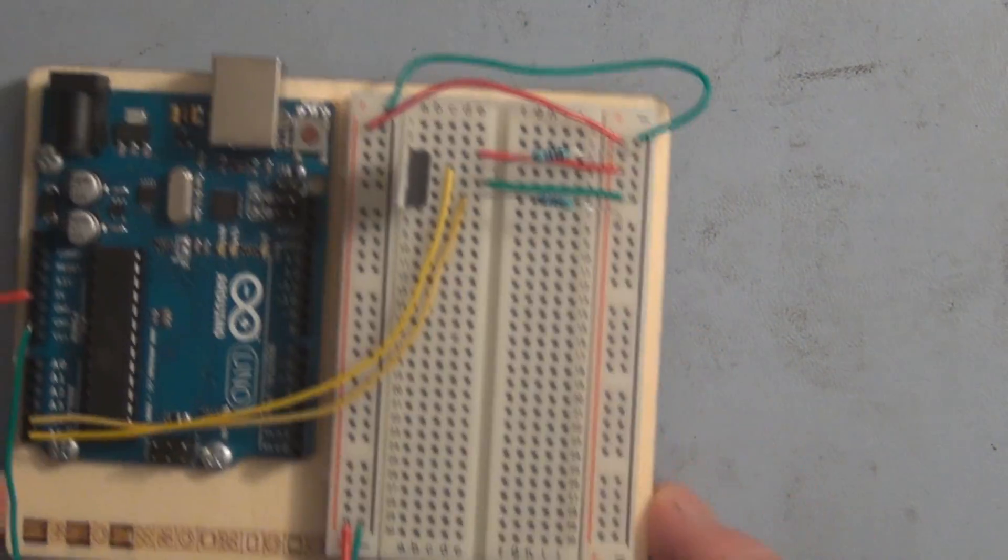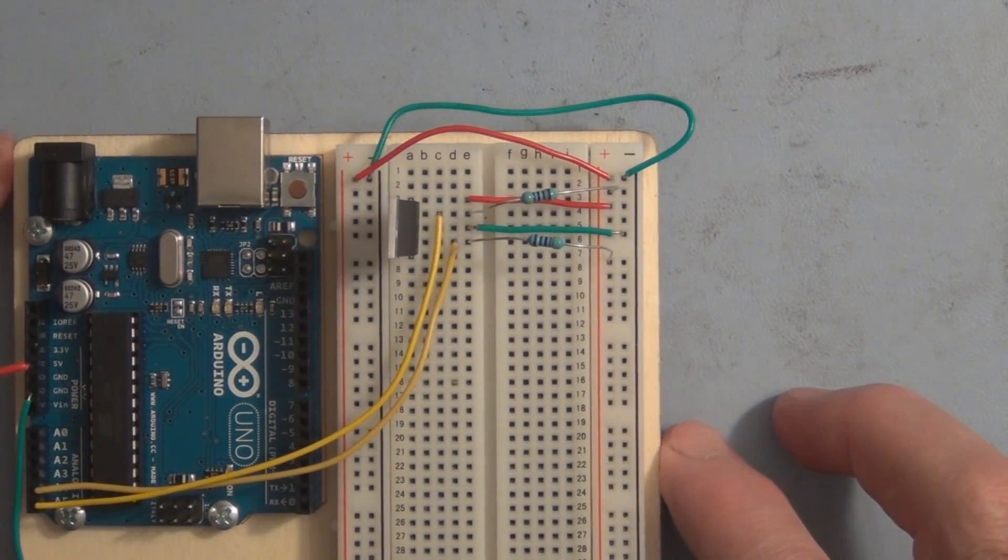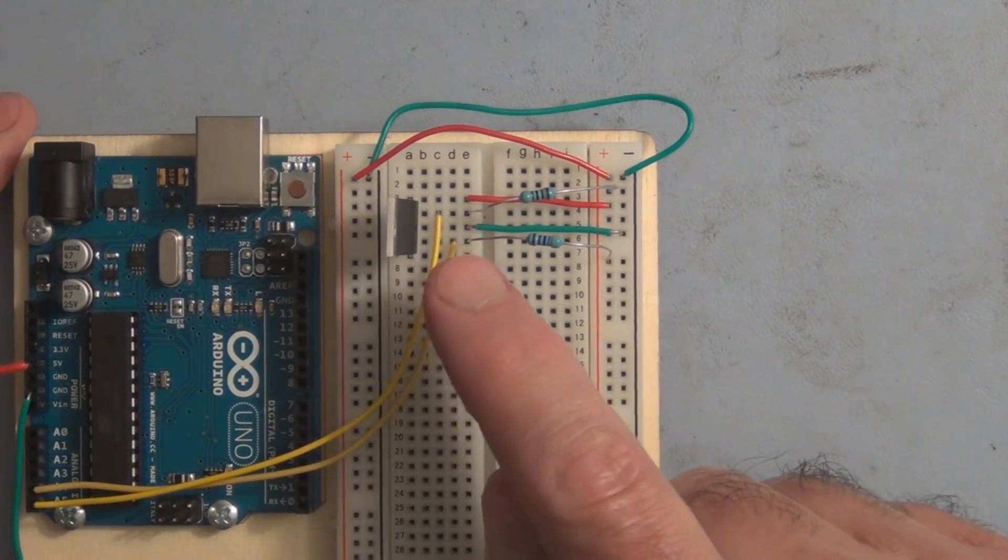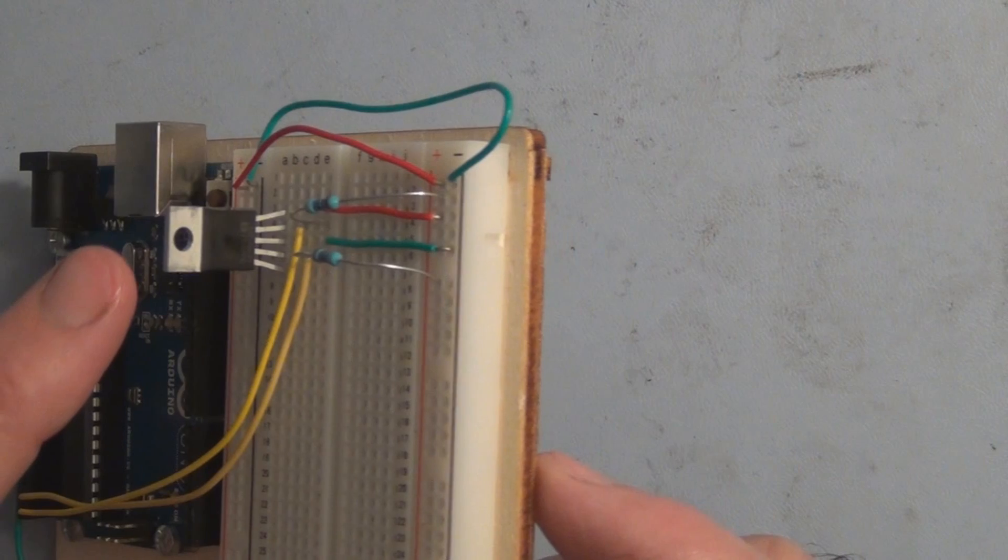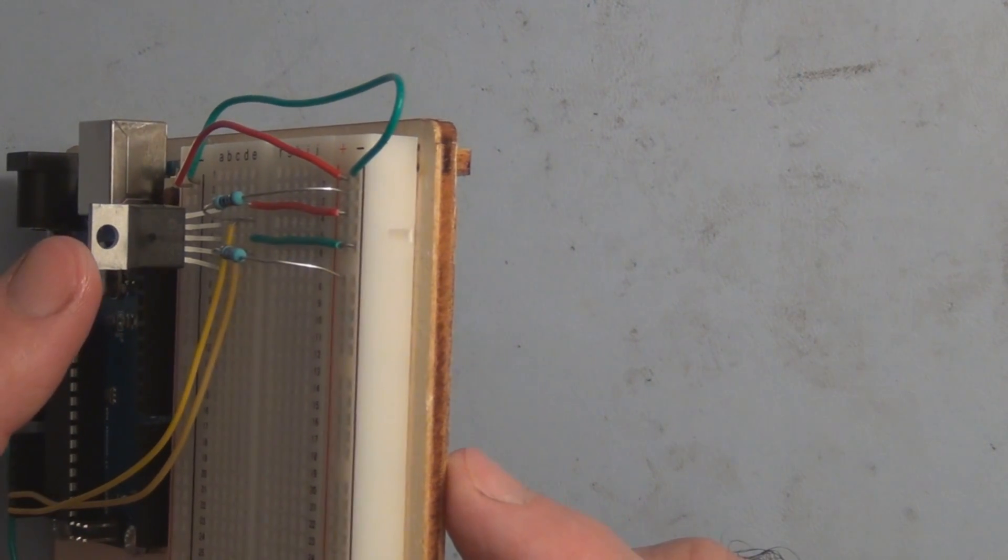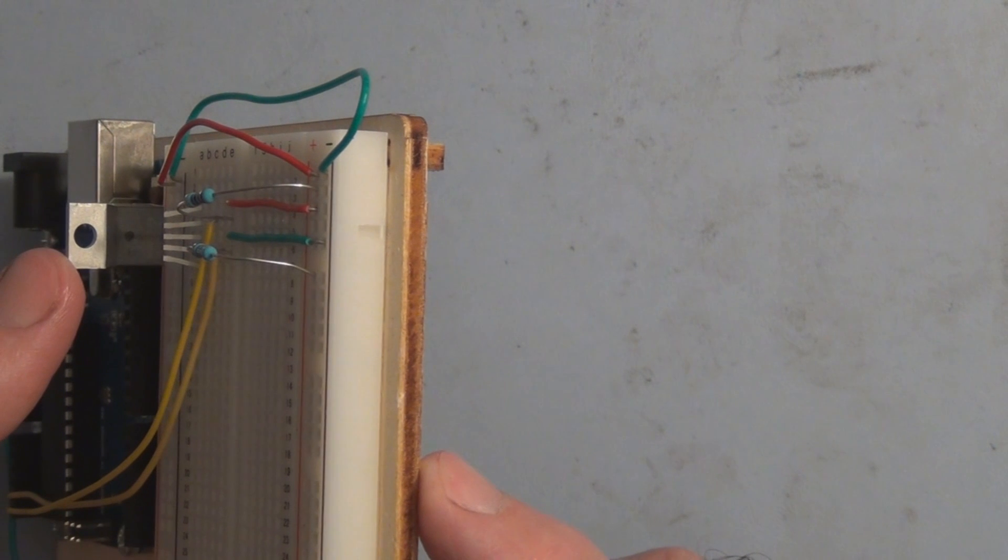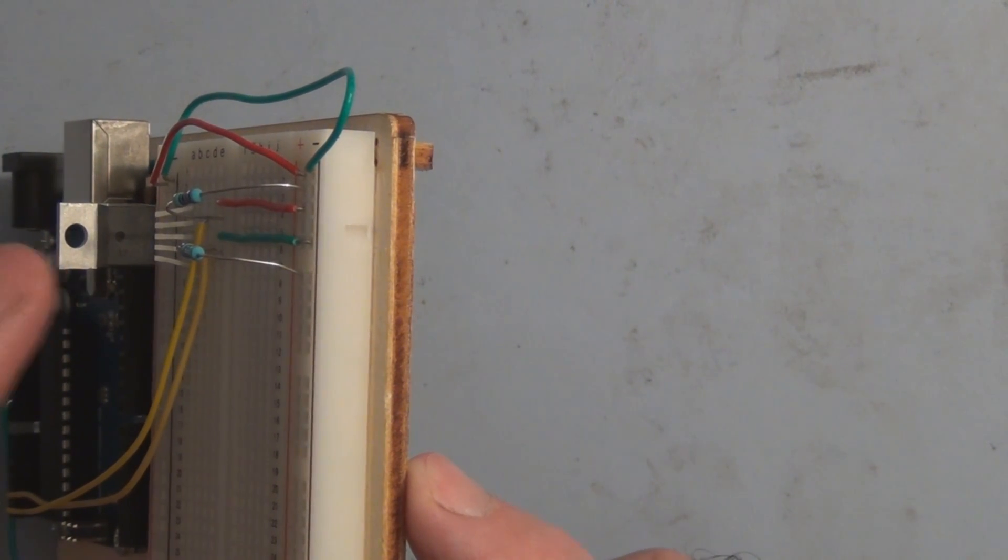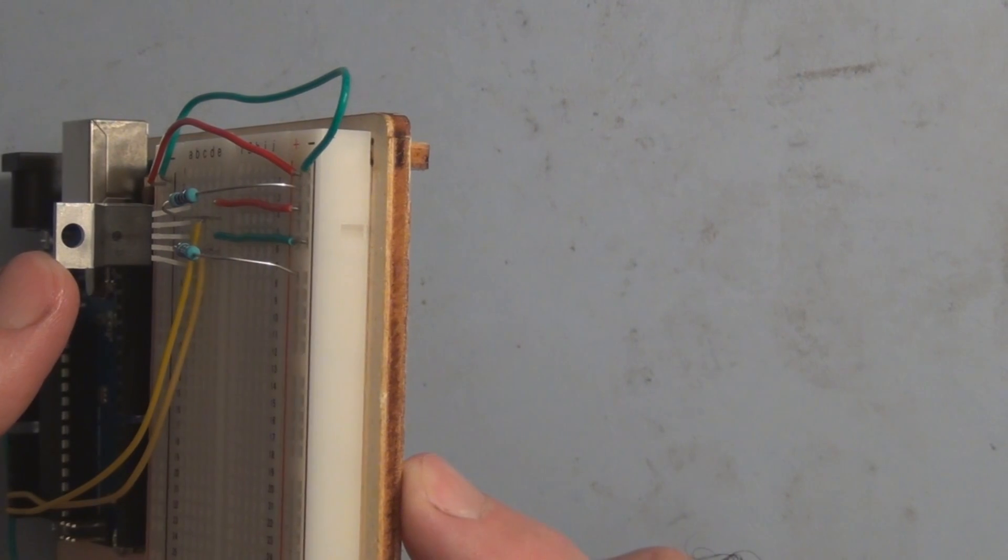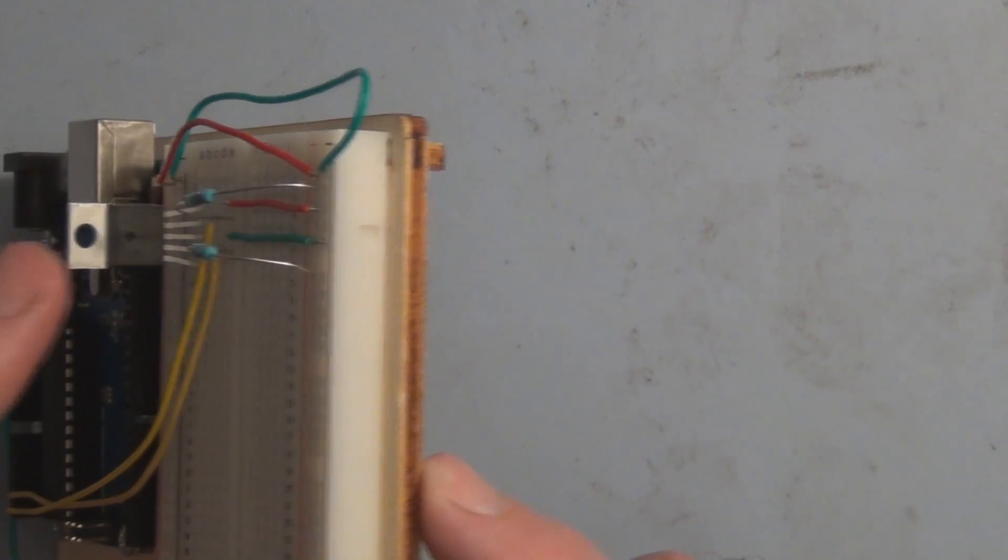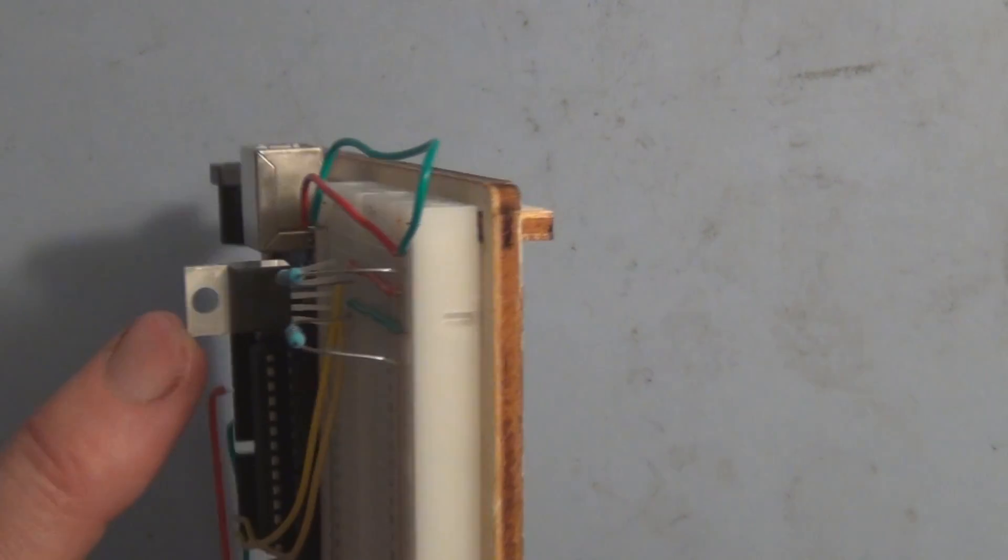We're going to measure temperature a little differently this time and we have two major differences actually. We're going to measure temperature digitally. This looks like an analog device but this is actually a digital temperature sensor and this measures degrees Celsius.